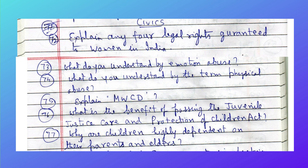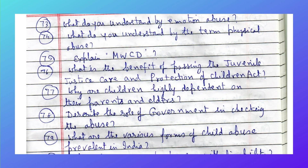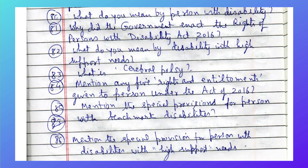Why are children highly dependent on their parents and elders? Describe the role of government in tackling abuse. What are the various forms of child abuse prevalent in India? What do you mean by a person with disability? Why did the government enact the Rights of Persons with Disabilities Act 2016?